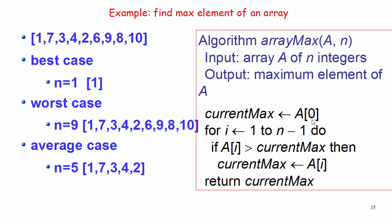Let me explain all these cases with an example. On the right-hand side you can see a pseudo code for a function called array max — we want to find out the maximum value inside an array. The function takes the array itself and the number of elements it contains as input. The expected output is the maximum element value inside the array. We write a simple linear algorithm to find the maximum value.